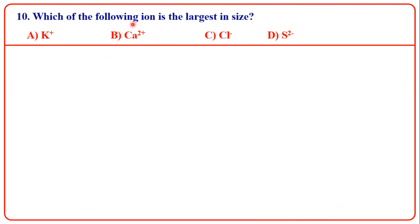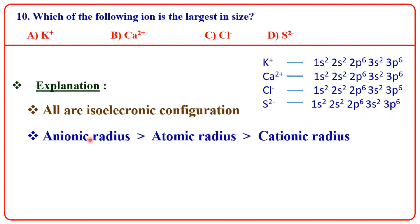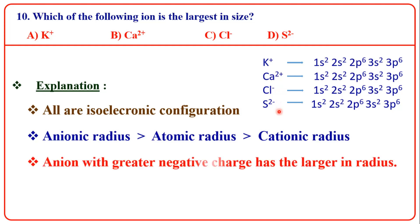Last question: which of the following ion is the largest in size? The four species have the same electronic configuration — isoelectronic species. For isoelectronic configuration, ionic radius is greater for anions and anionic radius increases with greater negative charge. The species with the greatest negative charge, S²⁻, will be largest. So the answer is D — S²⁻.